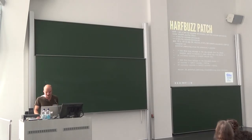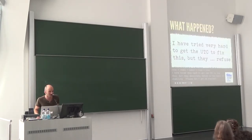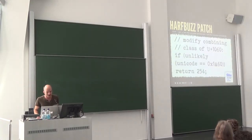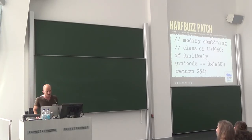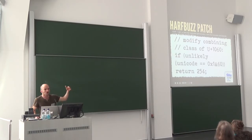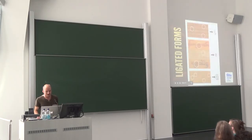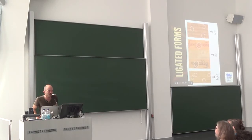That was not good news. But then Jonathan Kew, who does a lot of work for Mozilla, came up with a very simple patch for HarfBuzz which changes the combining class of character U+1060 so that it has a lower priority than the tone marks or the vowel signs that precede it — so you don't get the random reordering that was causing the dotted circle. Thank you, Jonathan Kew. This is how work gets fixed in the open source world.